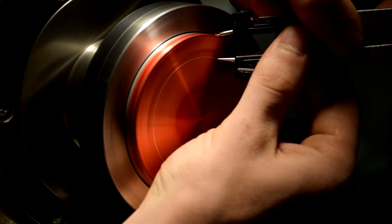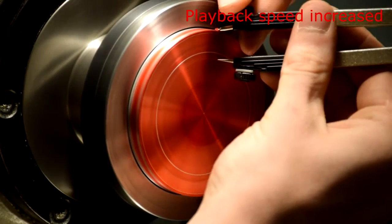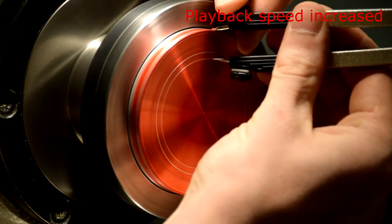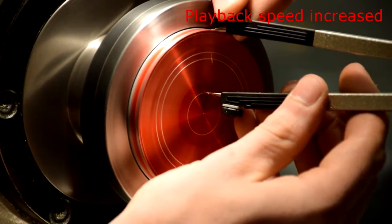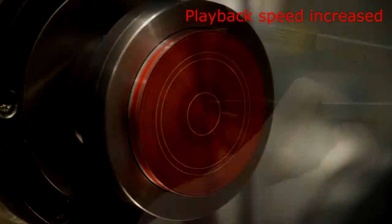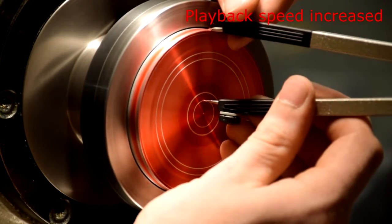For the first inside chamfer, scribe a line at 0.4 inches and 0.525 inches. For the second inside chamfer, scribe a line at 1.125 inches and 1.25 inches.